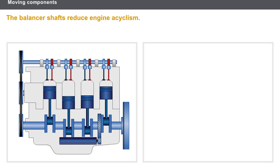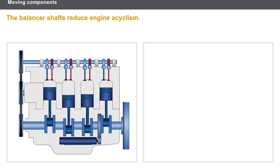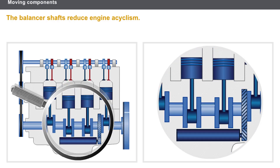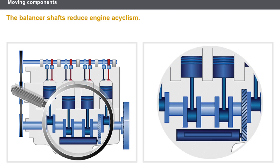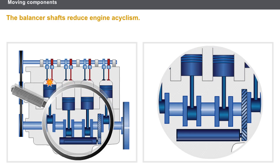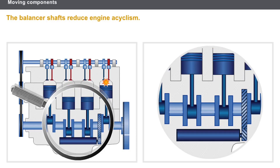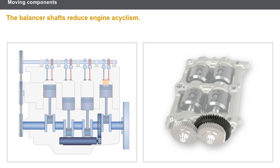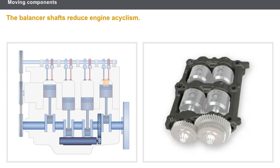The balancer shafts reduce engine acyclism generated by the forces caused by combustion. They turn twice as fast as the crankshaft, as there are two returns to top dead centre per crankshaft turn. The balancer shafts mainly comprise: two balancing weights, a drive wheel, and a balancer housing.